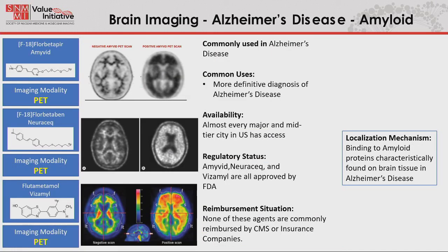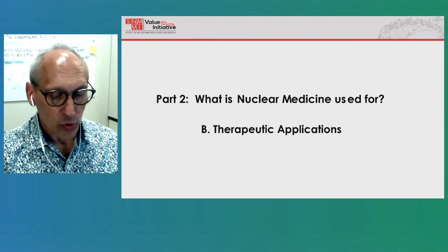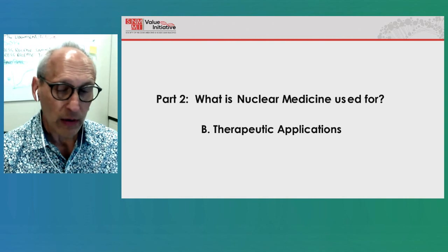The last diagnostic area I'll point out is three brain imaging agents for Alzheimer's disease — agents that image amyloid. These have been approved for almost a decade, but haven't been widely used because Medicare CMS does not reimburse for them — not because they don't work, but because there was no therapeutic available for Alzheimer's disease. Now, with the tentative approval of Aduhelm, it is possible that these agents will see widespread use to confirm a patient actually has Alzheimer's disease before they receive that very expensive therapeutic drug. Other drugs in the pipeline are doing functionally the same thing, so this is another area where nuclear medicine imaging may help manage patients with this common and devastating disease.